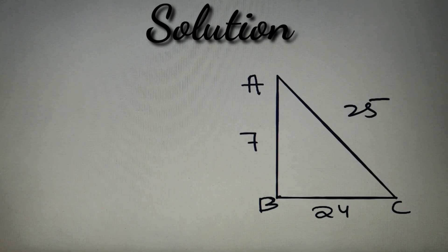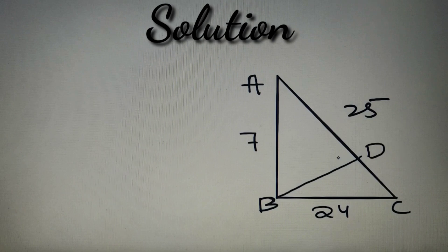According to the given question, we have to find the length of the perpendicular that is dropped from point B to side AC. If I consider this point as D, we have to basically find the length of BD.